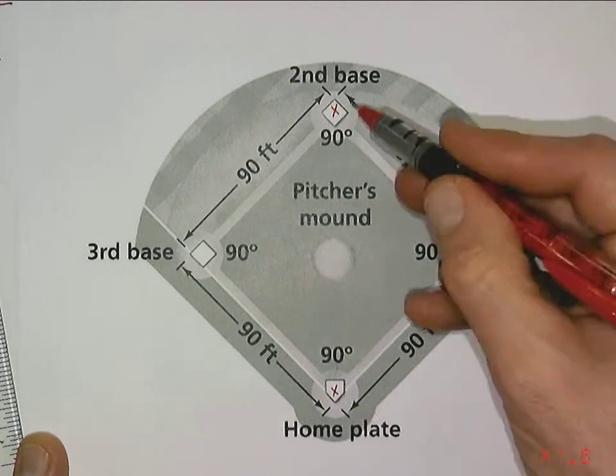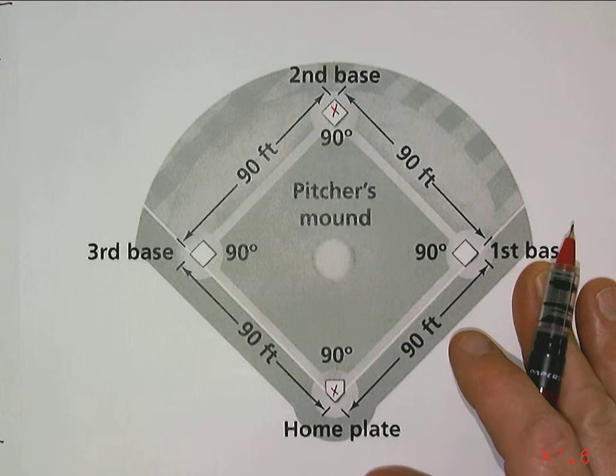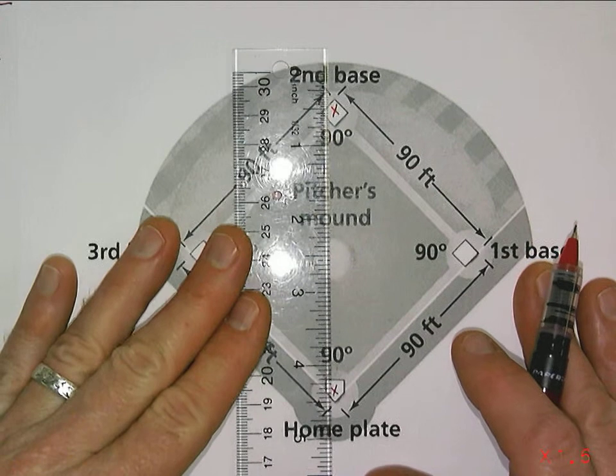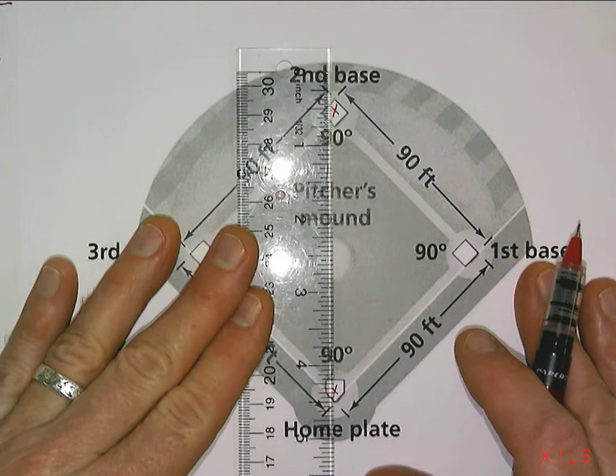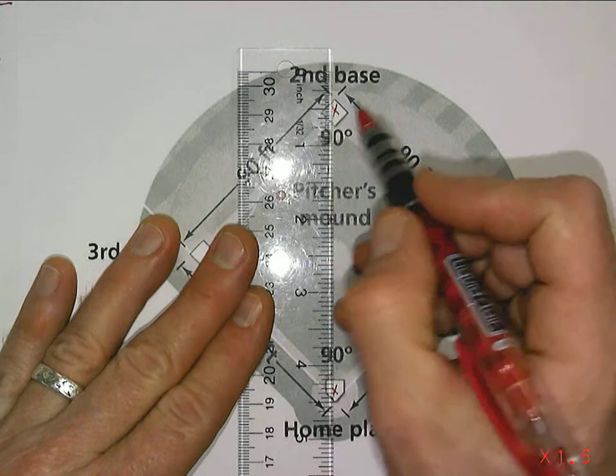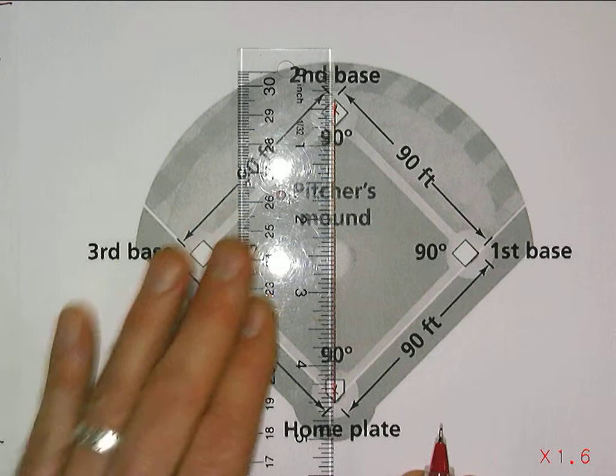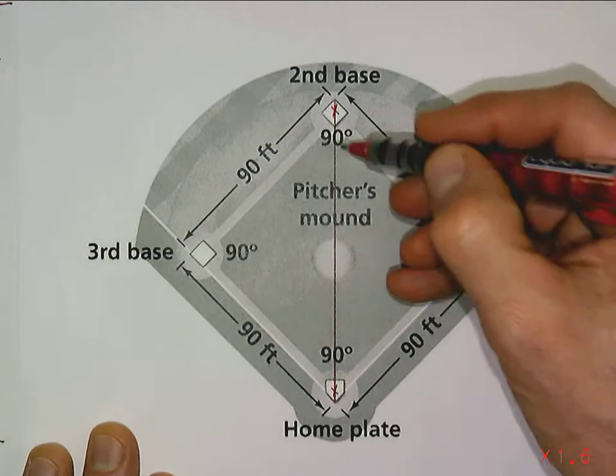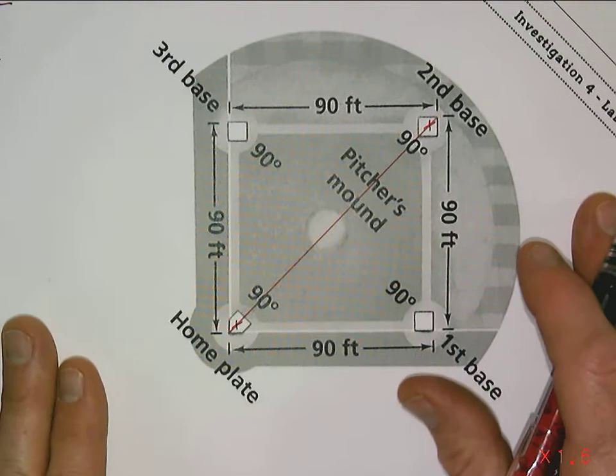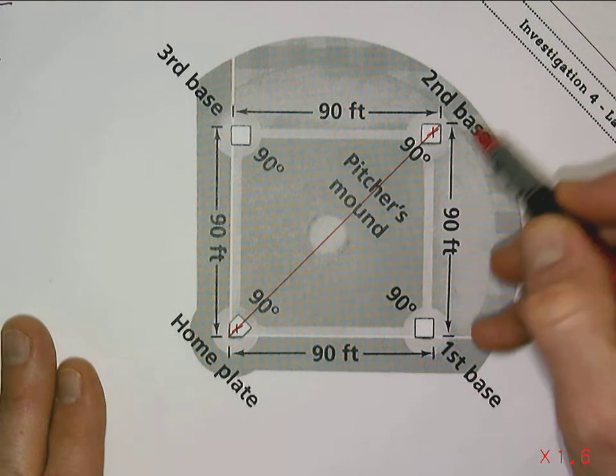The runner has to run 90 feet, but the question is how far does the catcher have to throw the ball from home plate all the way down to second base? This distance really simply becomes the hypotenuse of a right triangle.